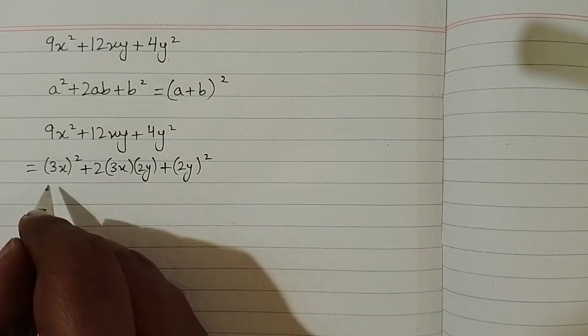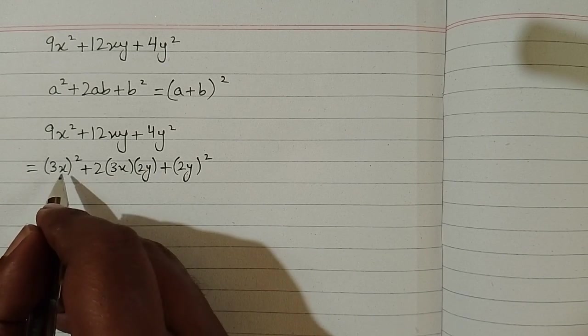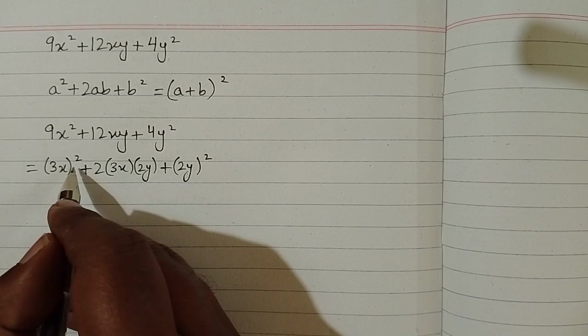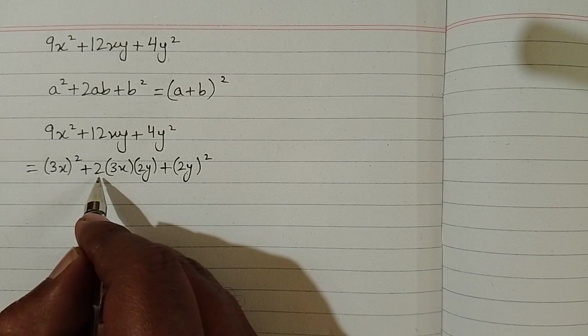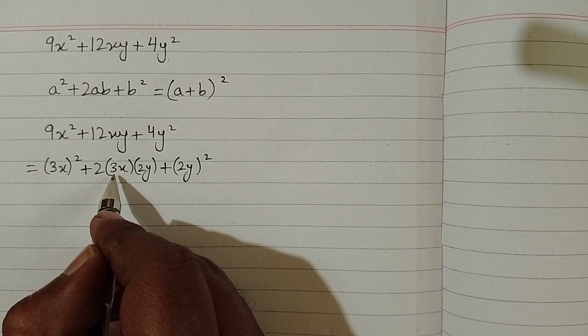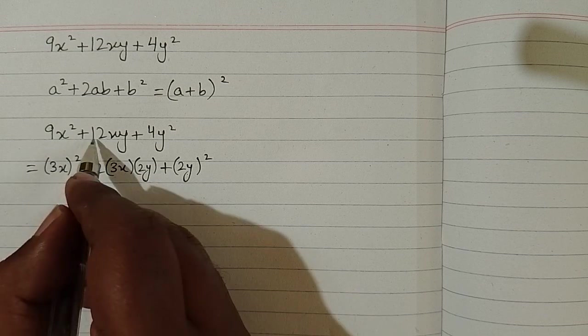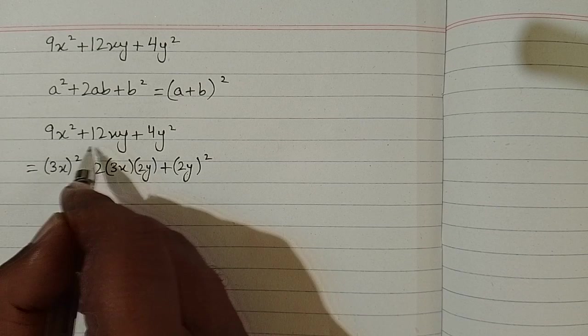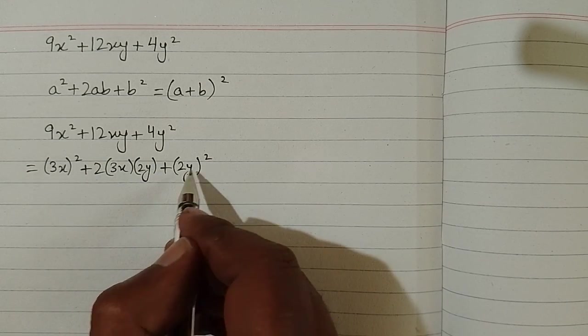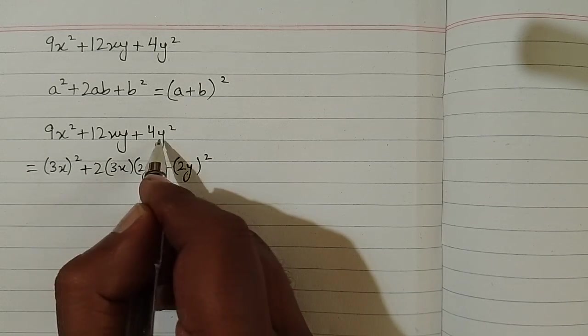Now if we expand these brackets so we will get the same expression because square of 3x is 9x square. And 2 times 3 is 6 and 6 times 2 is 12. So we have 12xy as a middle term and square of 2y square is 4y square.